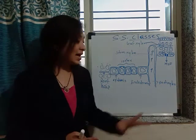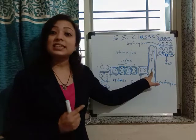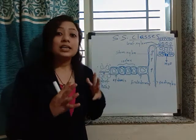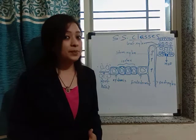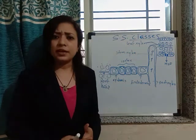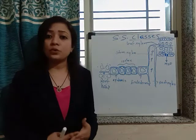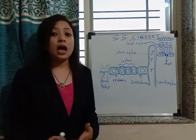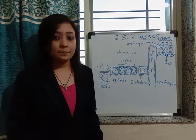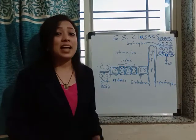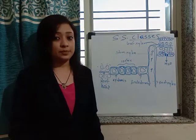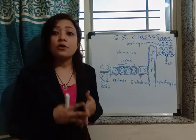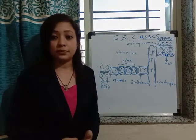From the root xylem, water enters the stem xylem and then into the leaf xylem by the process of transpiration. Transpiration is the process in which extra water from the plant body evaporates out through the leaf stomata. In this process, the plant releases its excess water into the atmosphere in the form of water vapor from the stomata present on the dorsal surface of the leaf.